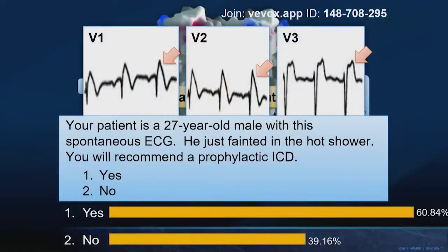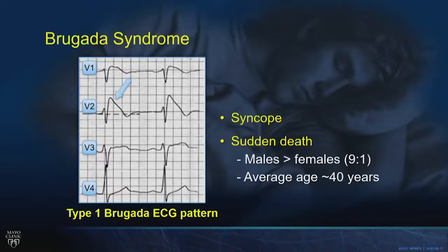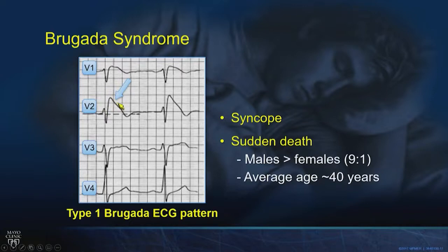We have a 60-40 split — yeses and noes. The correct answer is: it depends. What rhythm are you perceiving that he was in when he fainted? If it was a vasovagal faint, you stand down. If it wasn't a rhythmic faint, then you gear up for an ICD. Brugada syndrome starts with the type 1 Brugada ECG pattern, characterized by coved ST segment elevation — sometimes called extreme J-point elevation — followed by a downslope and an inverted T wave.